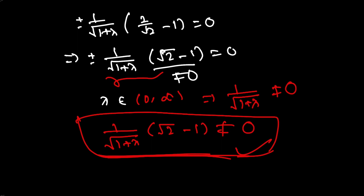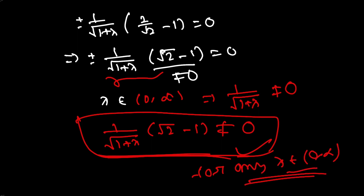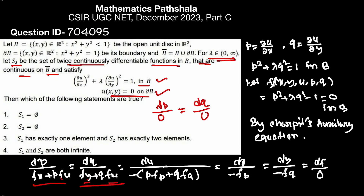Such a solution does not exist for any λ ∈ (0, ∞). Going to the options: option 1 says S(1) = ∅, which is correct. Option 2 says S(2) = ∅, also true. Option 3 says S(1) has exactly one element — that is false, S(1) has no elements. Option 4 says S(1) and S(2) are both infinite — also false. So options 1 and 2 are correct and option 3 is false.